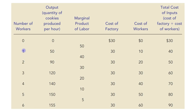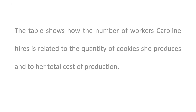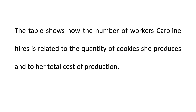If she hires one worker, cost of factory is $30 and cost of one worker is $10, so the total cost is $40. For example, if she hires three workers, cost of factory is $30 per hour and total cost is $60 per hour. The table shows how the number of workers Caroline hires is related to the quantity of cookies she produces and to her total cost of production.